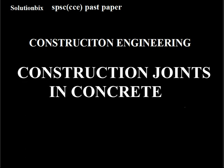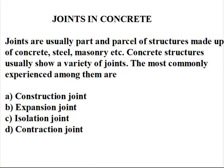Joints in Concrete. Joints are usually part and parcel of structures made up of concrete, steel, masonry, etc. Concrete structures usually show a variety of joints. The most commonly experienced among them are four main types: Construction Joint, Expansion Joint, Isolation Joint, and Contraction Joint. I will explain one by one.